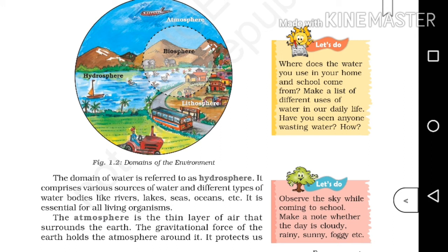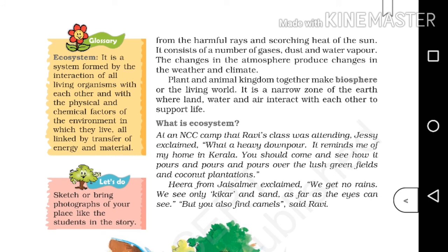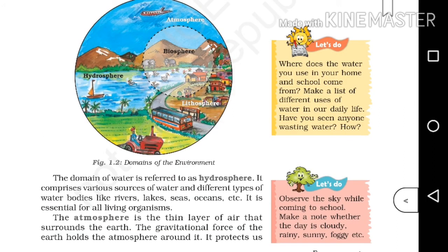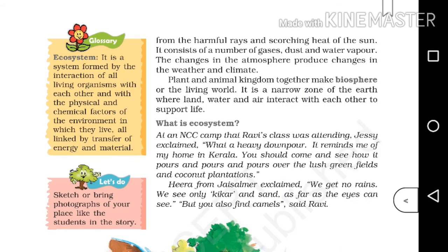The atmosphere is the thin layer of air that surrounds the earth. The gravitational force of the earth holds the atmosphere around it. It protects us from the harmful rays and scorching heat of the sun. It consists of a number of gases, dust, and water vapor. The changes in the atmosphere produce changes in the weather and climate.